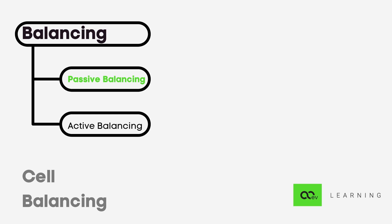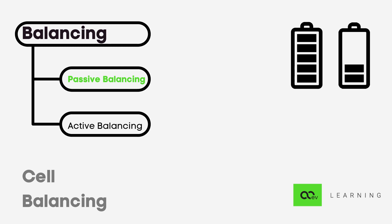Passive balancing drains charge from cells having more charge than others and dissipates it as heat. This is done by passing current through high resistance circuits. The primary advantage is the simplicity and cost effectiveness of the circuit. The drawback is that the excess energy can't be utilized in a productive manner.